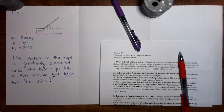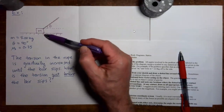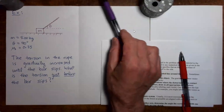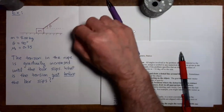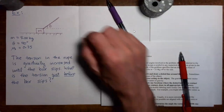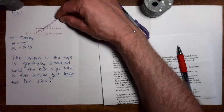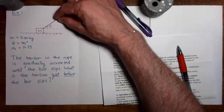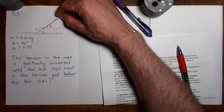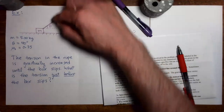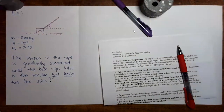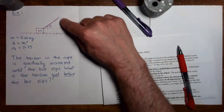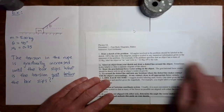In this problem we have a mass sitting on a horizontal floor. Initially the mass is not moving. A rope is attached to the mass and makes a 40 degree angle with the horizontal. The person pulling the rope starts gently, then gradually pulls harder and harder, and eventually the box is going to slip along the floor. We want to know what is the tension in the rope just before the box slips.